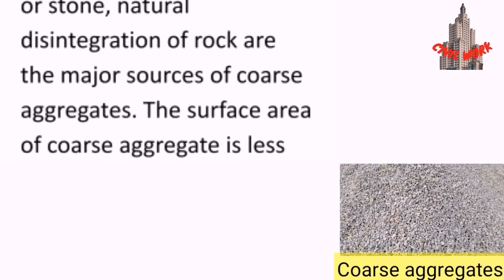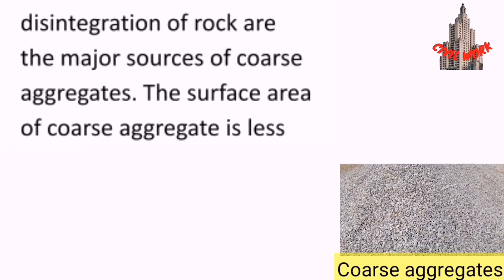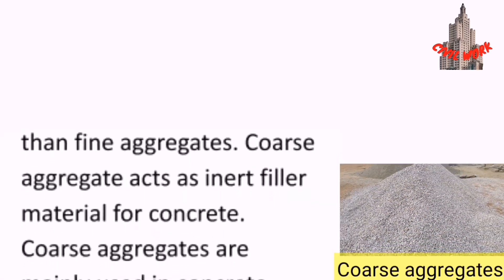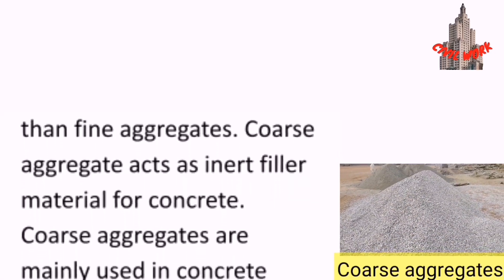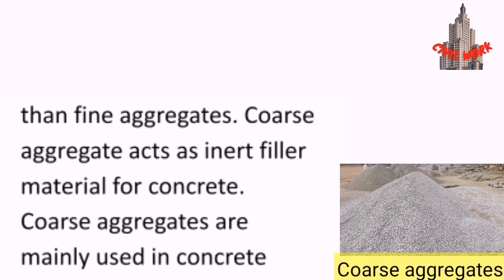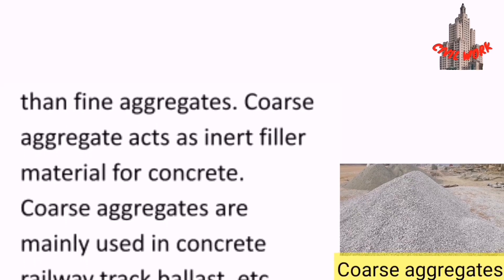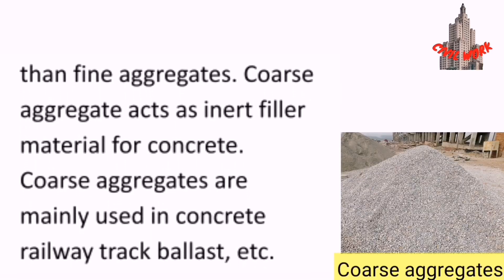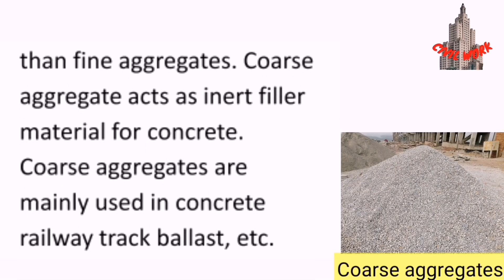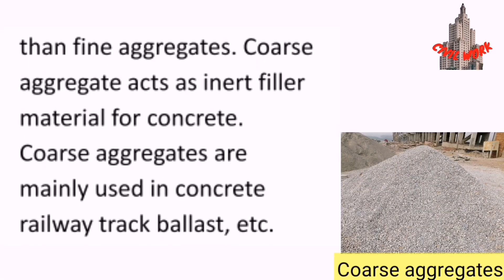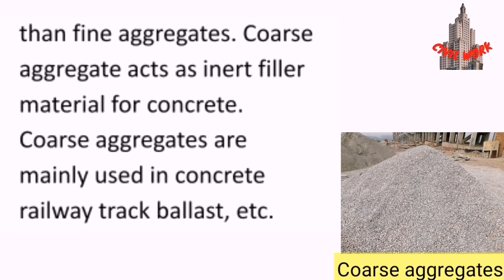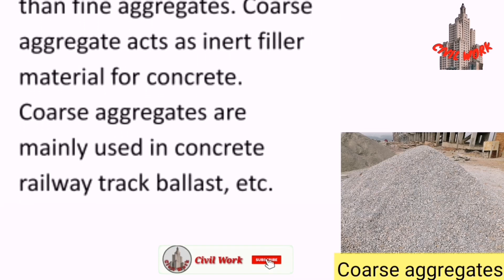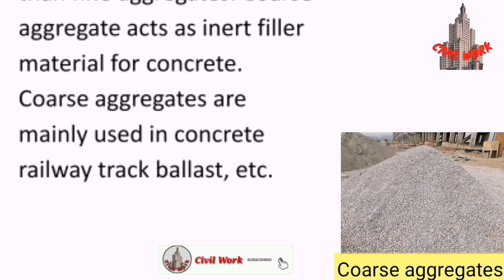The surface area of coarse aggregate is less than that of fine aggregates. Coarse aggregate acts as an inert filler material for concrete. Coarse aggregates are mainly used in concrete, railway tracks, and blasts.